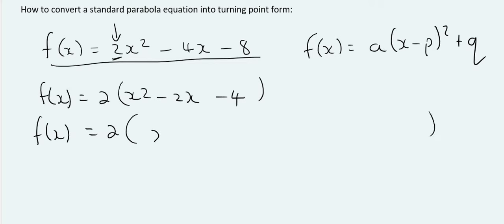And then just do the normal process that we did in the previous video. Okay, so that was where you write down x squared minus 2x, the minus 4 goes at the very end.